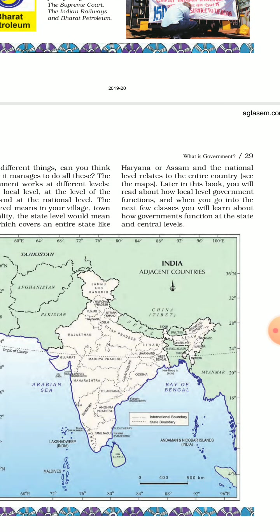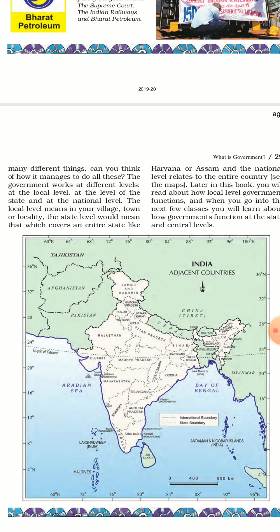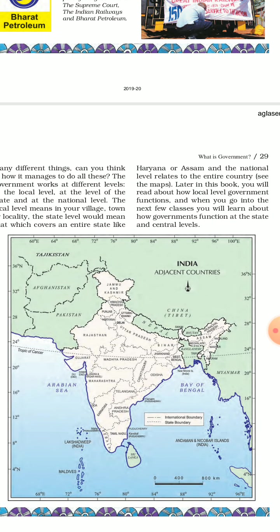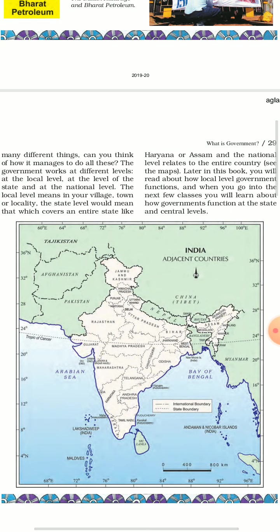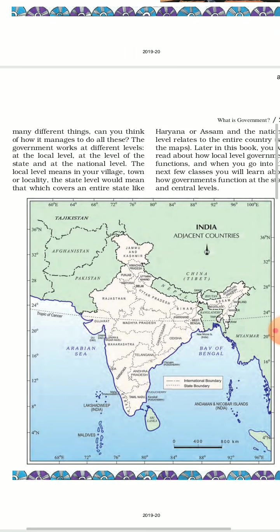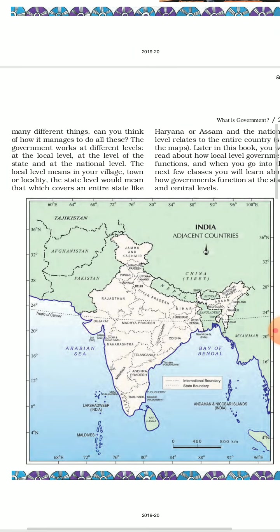At the local level, it covers the village, town or locality, and is named as Gram Panchayat, Municipality, or Municipal Corporation. At the state level, it covers an entire state like Haryana or Assam, and the state government governs its own state.